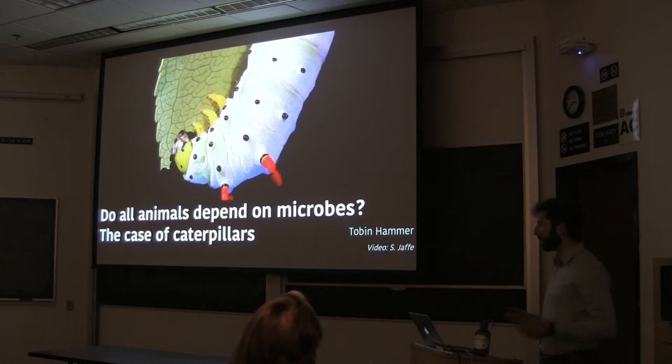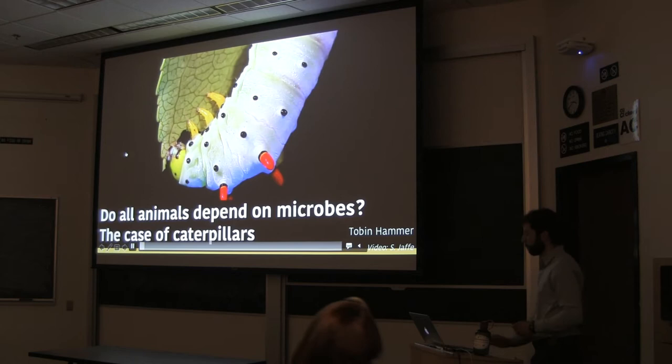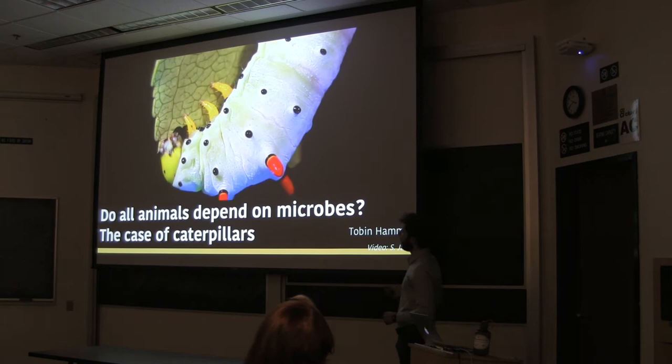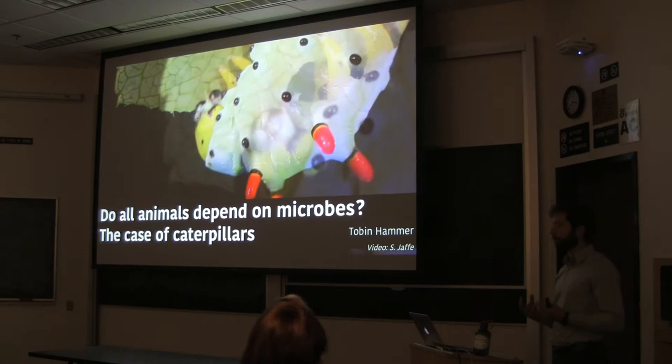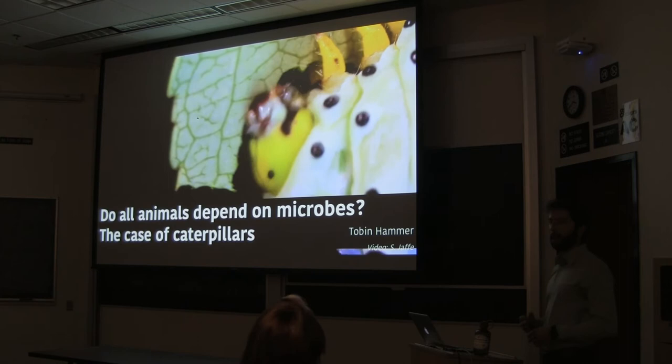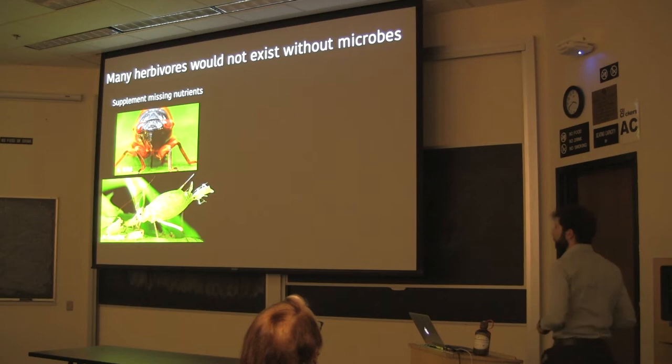Thank you, Dean, for the introduction, and thank you all for coming. The focus of my talk today is caterpillar digestion — the process by which caterpillars turn plant biomass into insect biomass. It may seem like an esoteric subject, but digestion is really the essential core of herbivory, which is a majorly important ecological interaction, and it's also thought to be central to the diversification of caterpillars and other herbivorous insects.